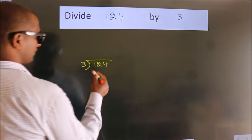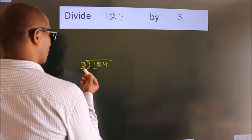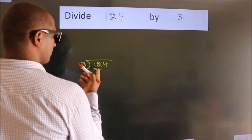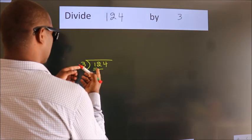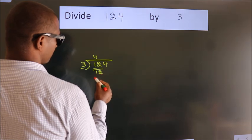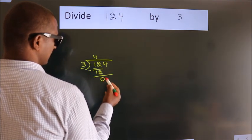Next, here we have 1, here 3. 1 smaller than 3. So we should take 2 numbers, 12. When do we get 12? In 3 table. 3 4s, 12. Now we should subtract. We get 0.